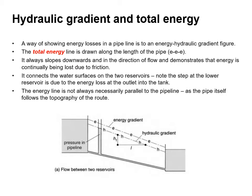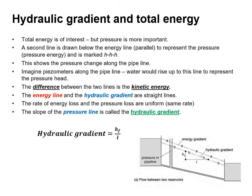Note the step at the lower reservoir is due to energy loss at the outlet to the tank. The energy line is not always parallel to the pipeline, as the pipe follows the topography of the route. The total energy in the pipe is of interest but the pressure is more important. A second line is drawn below the energy line — marked H — representing pressure energy, showing pressure changes along the pipeline. Imagine piezometers along the pipeline: water would rise to this line to represent the pressure head. The difference between the two lines is the kinetic energy.